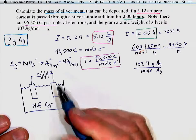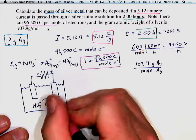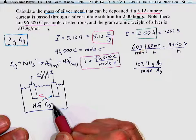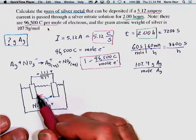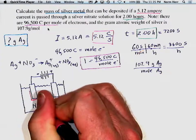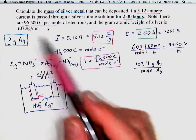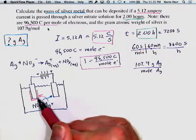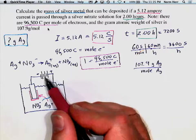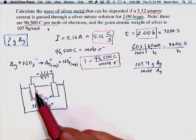Opposites attract, so the nitrate anions go toward the positive electrode, while the silver cations go toward the negative electrode — the cathode. Cations go to cathodes. The silver plates out on the cathode electrode, which brings us back to our original question: what mass of silver metal can be deposited if a 5.12 ampere current is flowing through this solution.